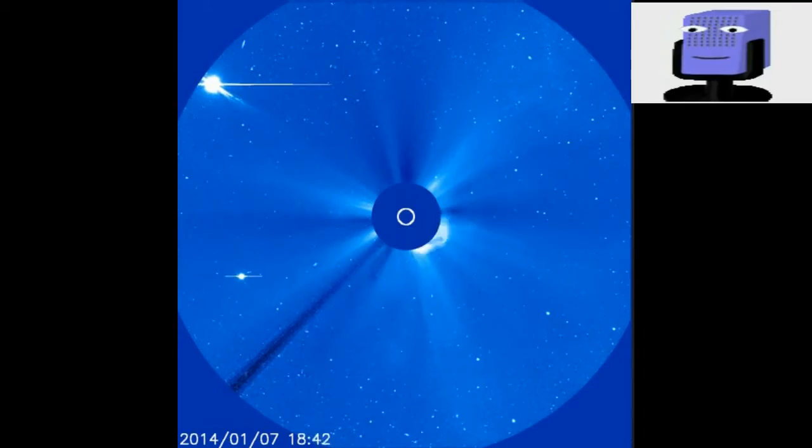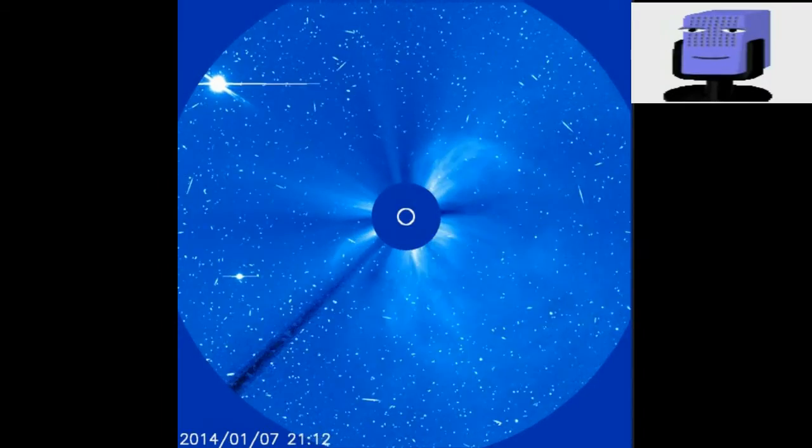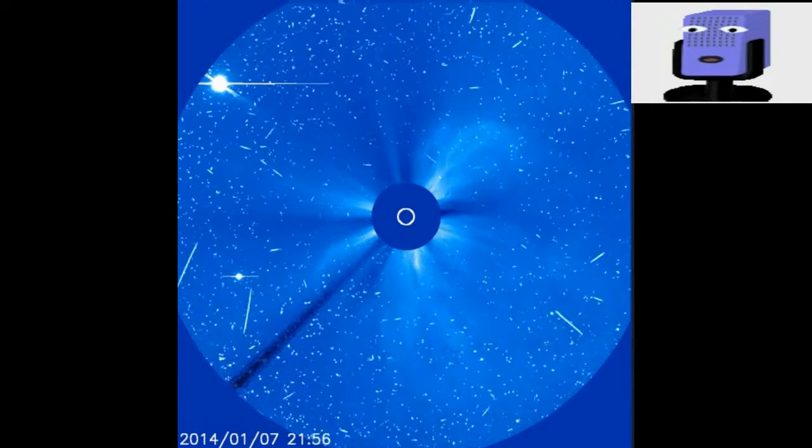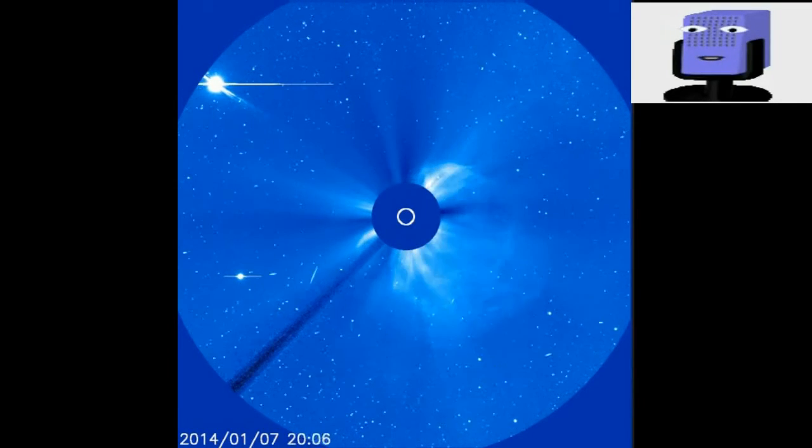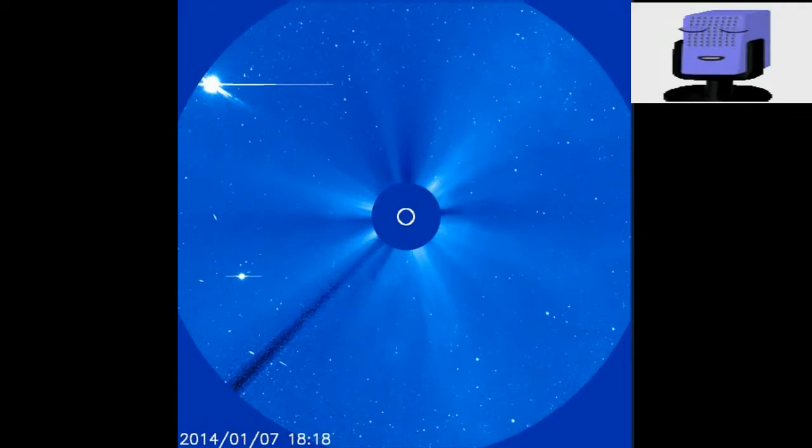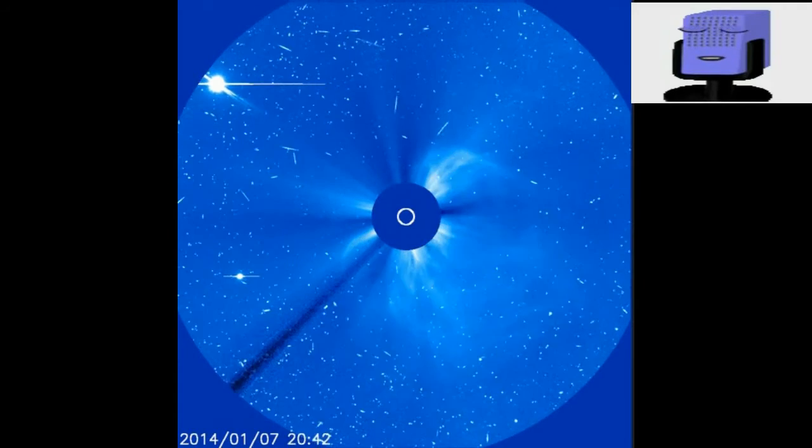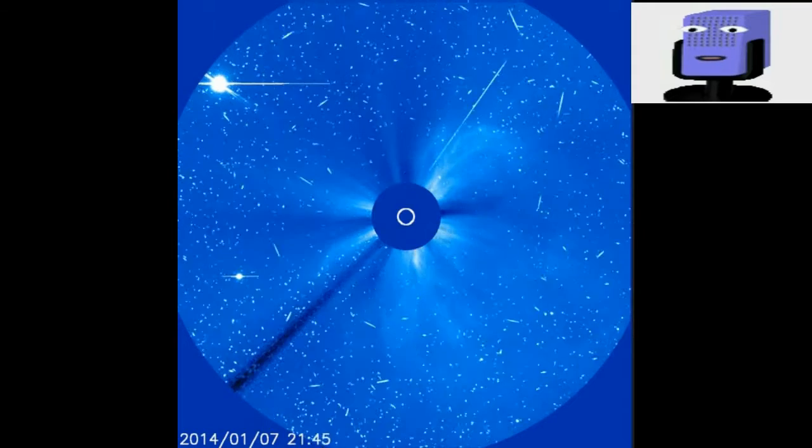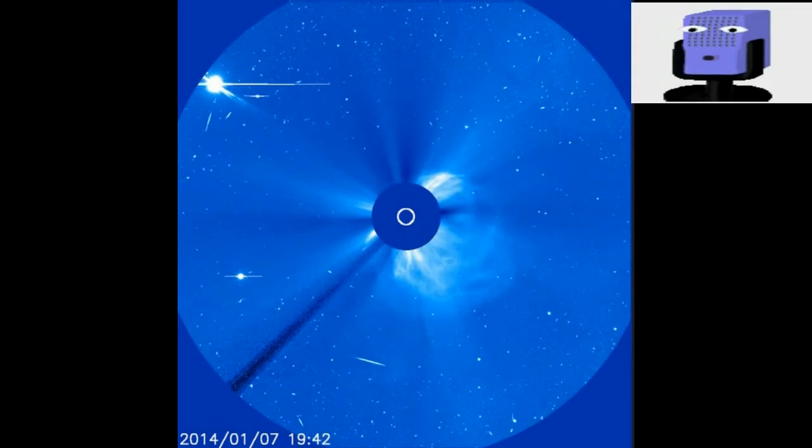Growing quiet? Giant sunspot R1944 has not unleashed a significant flare in more than 48 hours. The growing quiet could be the calm between storms. R1944 has an unstable beta-gamma-delta magnetic field that harbors energy for X-class flares.